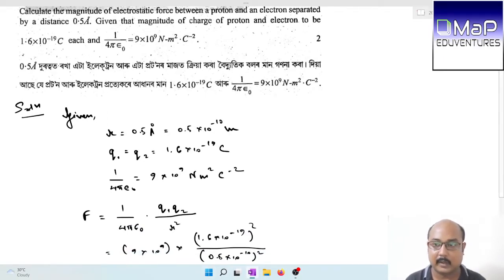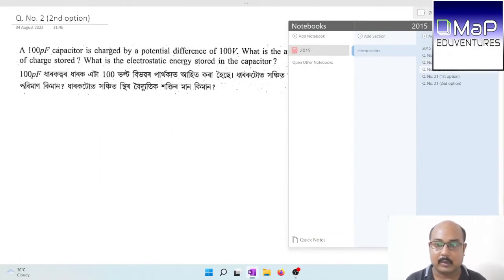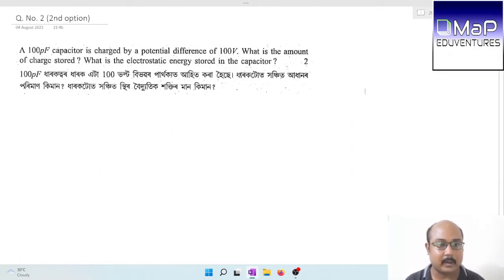Now we move to the next question, the second option of question number 2. A 100 picofarad capacitor is charged by a potential difference of 100 volt. What is the amount of charge stored? What is the electrostatic energy stored in the capacitor? Given capacitance is equal to 100 picofarad. In SI units, 100 into 10 to the power minus 12 farad. And the voltage V is equal to 100 volt.